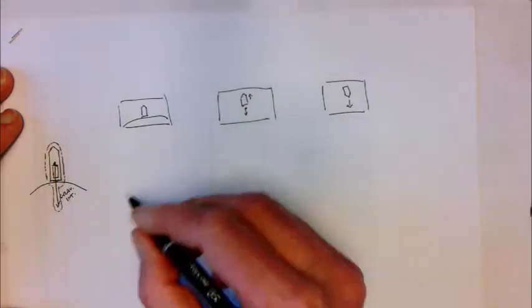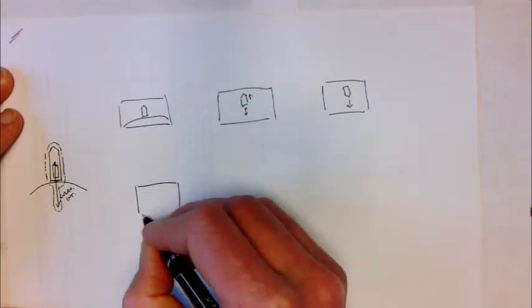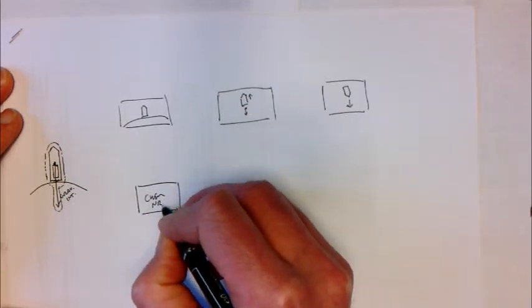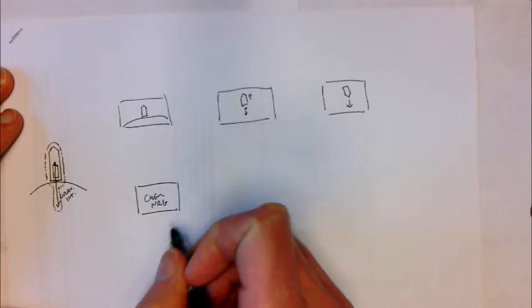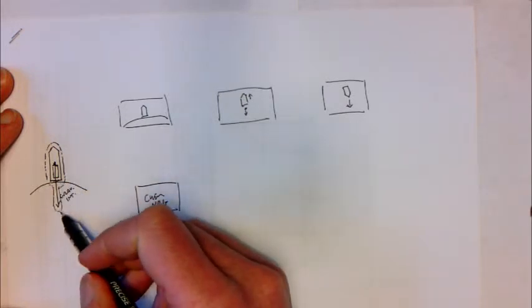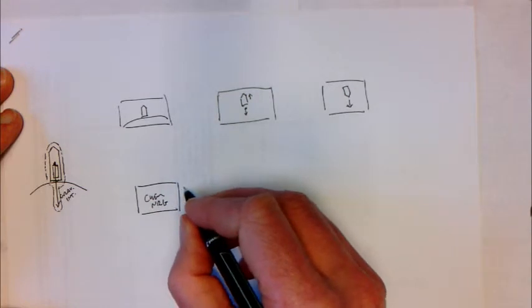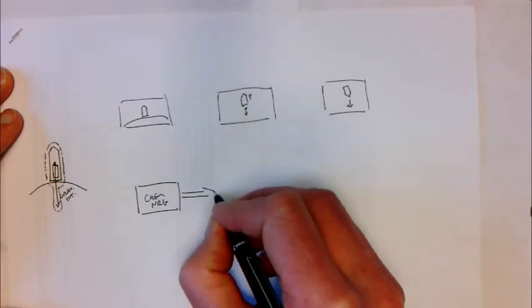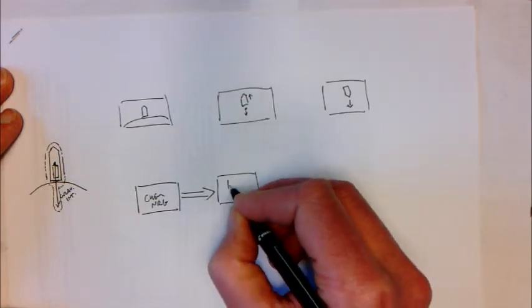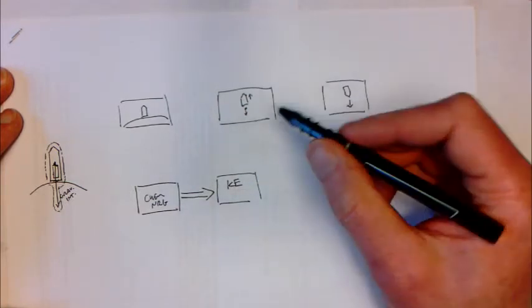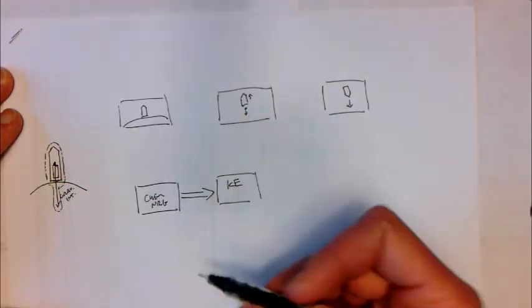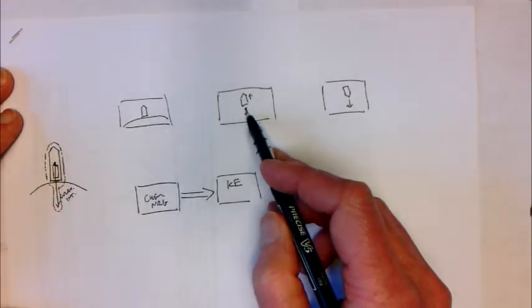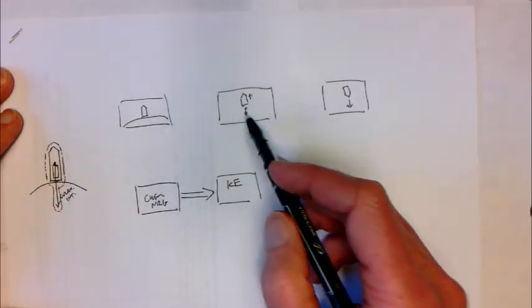Let's think about energy flows. One place we can store energy is in the chemical energy of the fuel. When the fuel burns, it turns into an expanding gas that's pushed out the back of the rocket and pushes the rocket up, so that chemical energy gets converted into kinetic energy. This includes kinetic energy stored in the motion of the rocket and remaining fuel, as well as kinetic energy stored in the motion of the exhaust — that's the total kinetic energy of the system.